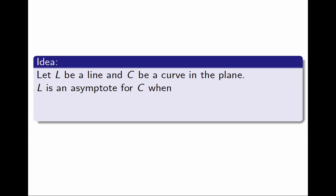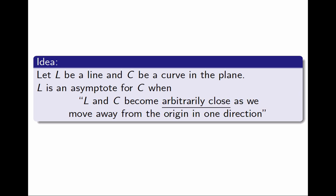I have a line I'm calling L and a curve I'm calling C in the plane. Perhaps the curve is the graph of a function, although this is more general. I want to say what it means that the line is an asymptote for the curve. This is going to mean that the line and the curve become arbitrarily close as we move away from the origin in one direction. Arbitrarily close means that the distance between the line and the curve has limit zero.